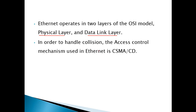In order to handle collisions, the access control mechanism used in Ethernet is CSMA/CD — Carrier Sense Multiple Access with Collision Detection. Collision means that at the same time, multiple stations transmit data and they strike each other. To avoid this, Ethernet uses the CSMA/CD technique.